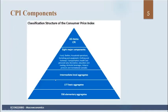Here's a classification structure of the consumer price index. The all-items CPI has all the different components. Statistical agencies calculate price indices for different components. There are eight major components: food, shelter, household operations, furnishing and equipment, clothing, footwear, transportation, health, and so on.